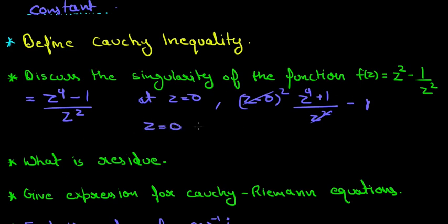Hence, z = 0 is a double pole, because there is a power of 2 in here. So that's why it is a double pole, or the pole of order 2.